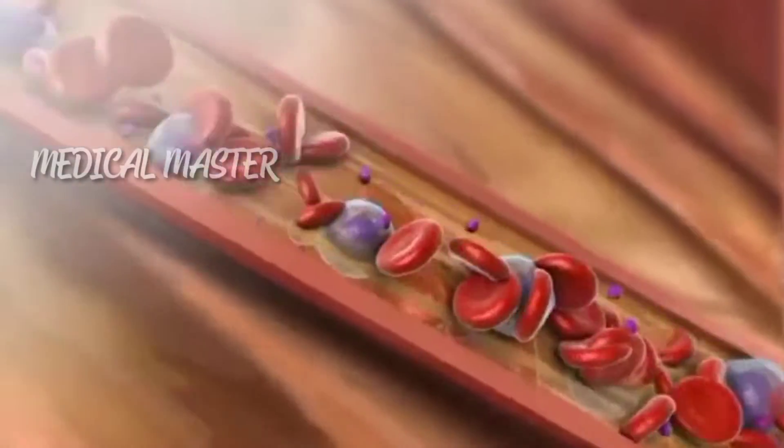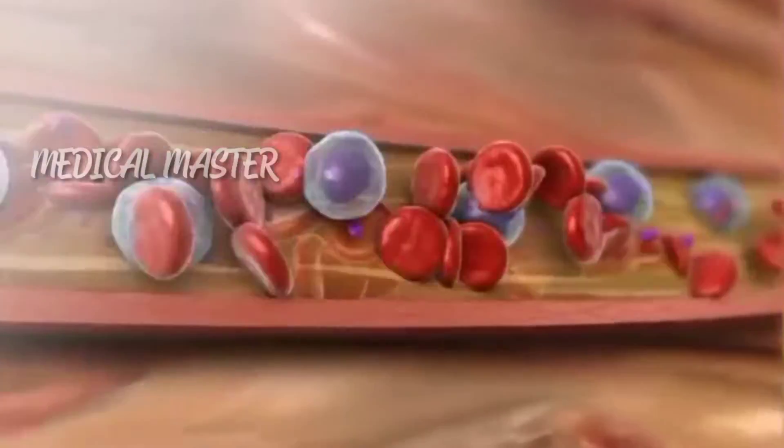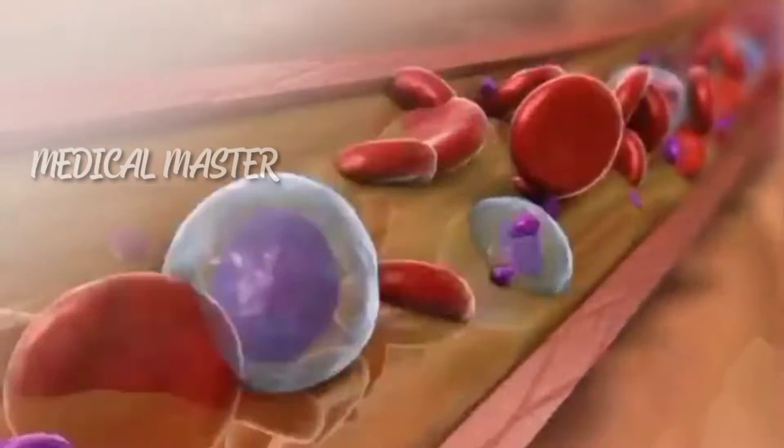The largest component of blood is plasma, a yellowish liquid that is 90% water. Plasma carries suspended blood cells and other substances.